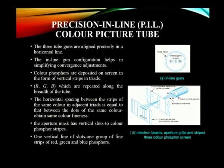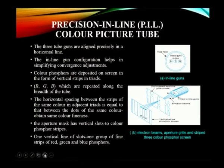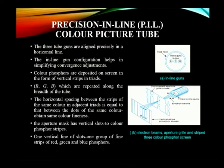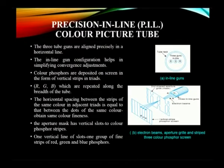We start with the Precision Inline Color Picture Tube. The name itself indicates that the arrangement of the guns is in a line — all three guns, R, G, and B, are placed in a horizontal line. One of the key advantages of placing the three guns in a line is that convergence can be adjusted easily, which is a primary advantage of the Precision Inline design.